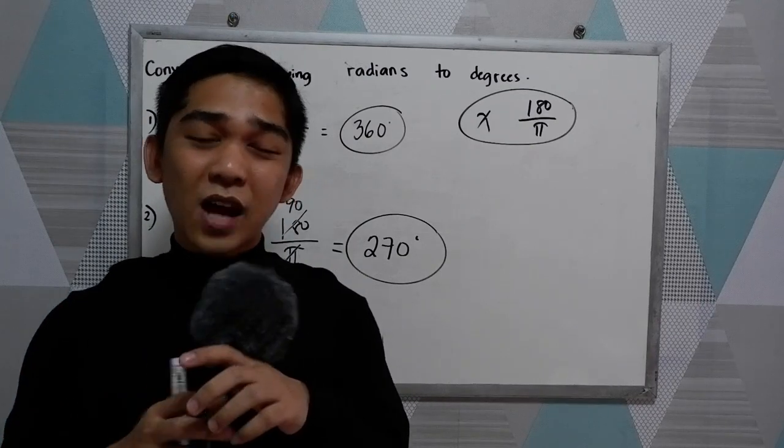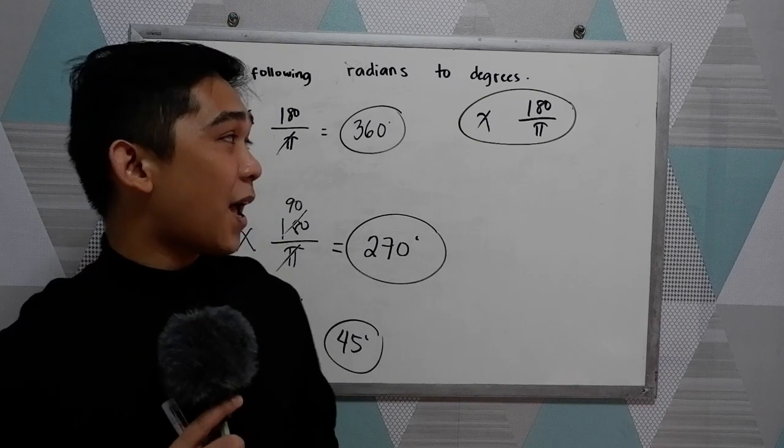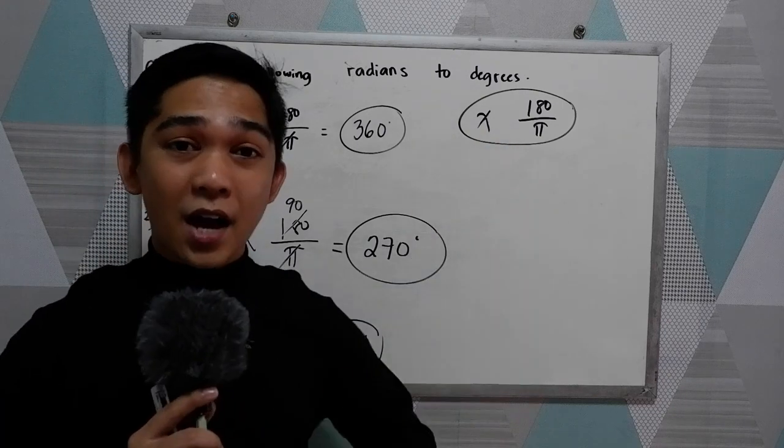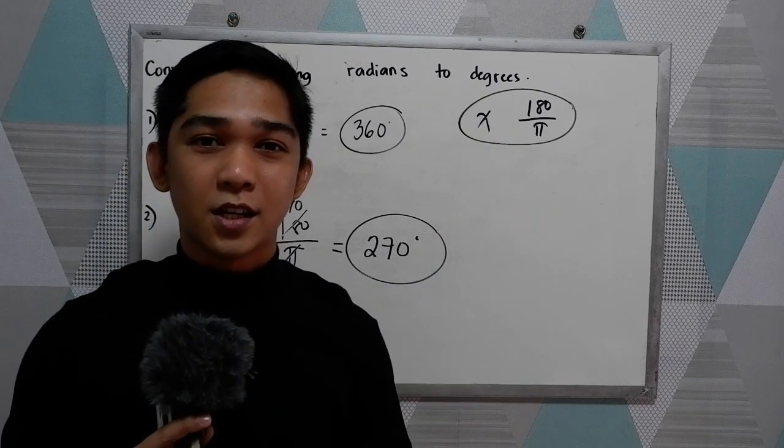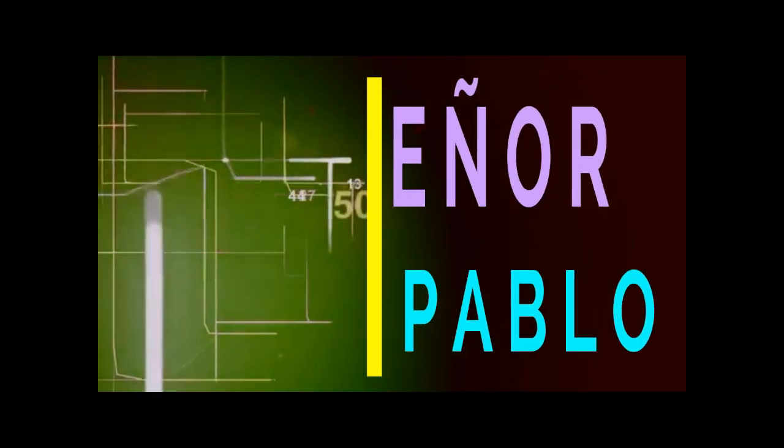So that's how to convert degree measure to radian measure and vice versa. Just multiply it by 180 over pi or pi over 180. Thank you for watching Senior Pablo TV.